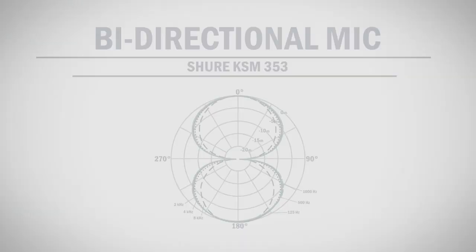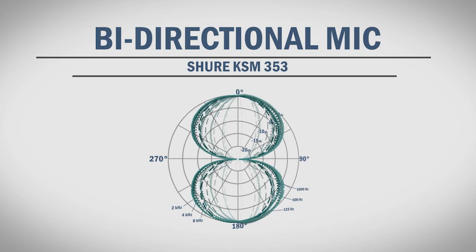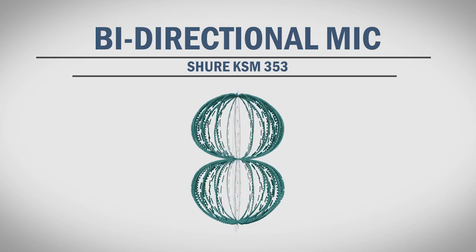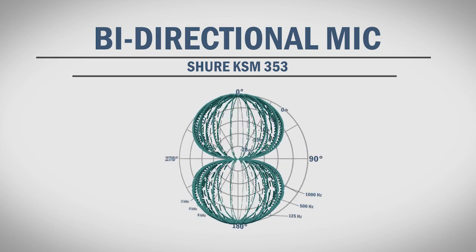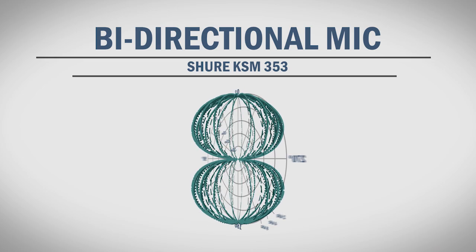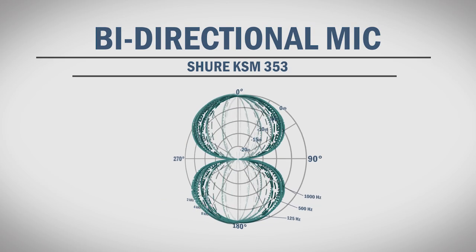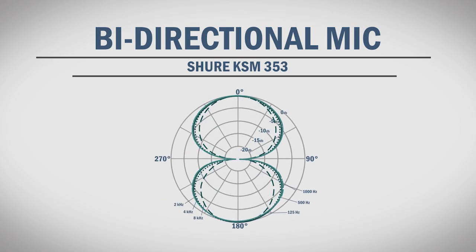A bidirectional pickup pattern is sometimes referred to as a figure eight pattern. These mics are designed to pick up audio from the front and back of the mic while rejecting sound from the sides. This is the pattern for the Shure KSM353. You can see that the mic picks up sound equally from the front and back of the diaphragm. These mics are most commonly used to record musical instruments.